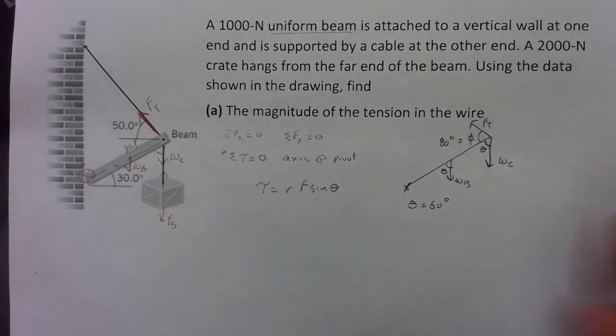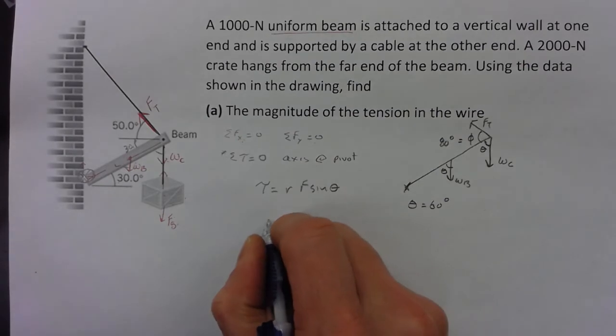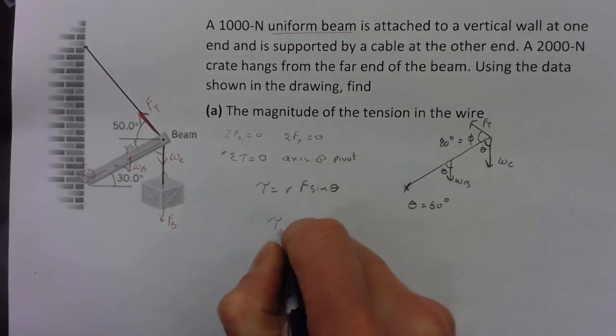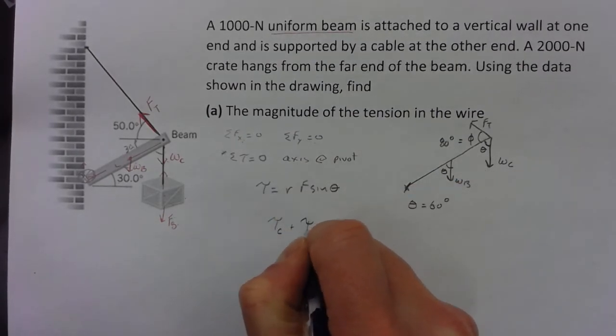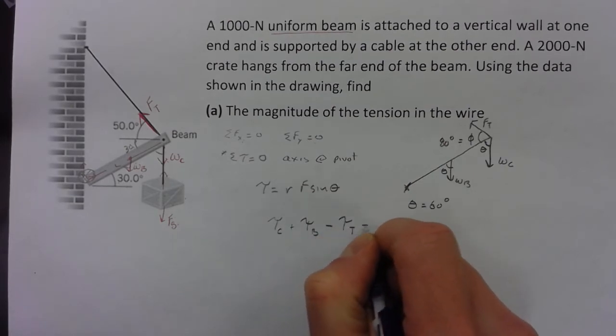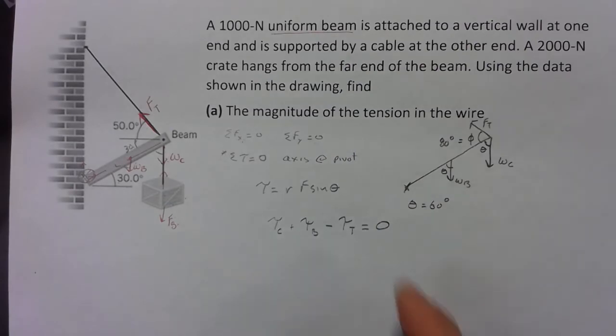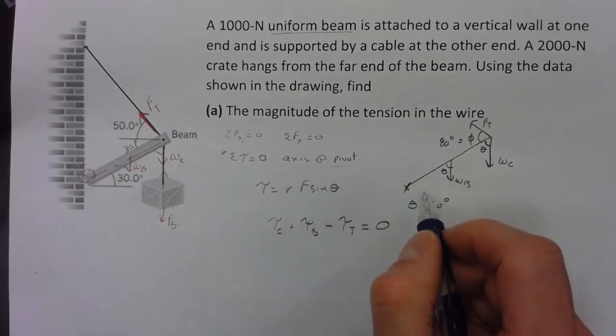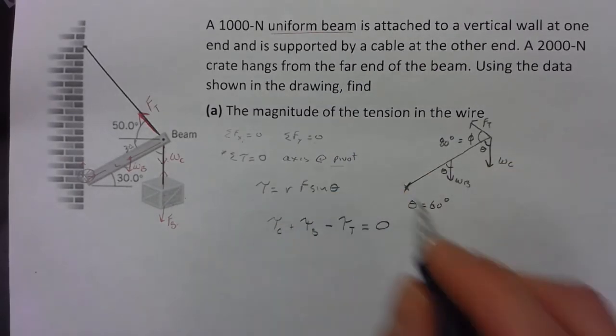Now I've got to add these all up though, so I'm going to take counterclockwise as positive. So we've got the torque due to the crate plus the torque due to the beam minus the torque due to the tension—that all has to add up to zero.